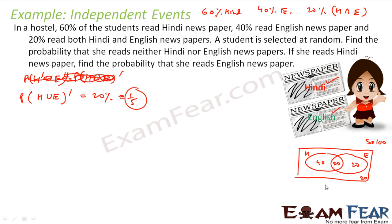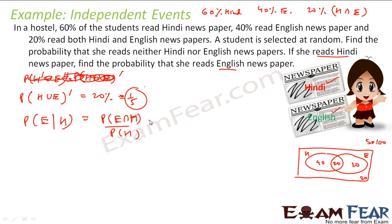I am looking for the probability of people who don't read Hindi and don't read English — that is, (H ∪ E) complement. Hindi and English complement is 20%, so this is 20% which equals 1/5. Just from the Venn diagram I could tell this. The second part: if she reads Hindi, find the probability that she reads English newspaper — that is P(English | Hindi). This equals P(E ∩ H) / P(H) = 20/100 ÷ 60/100 = 20/60 = 1/3. So the probability that she reads English given she reads Hindi is 1/3.